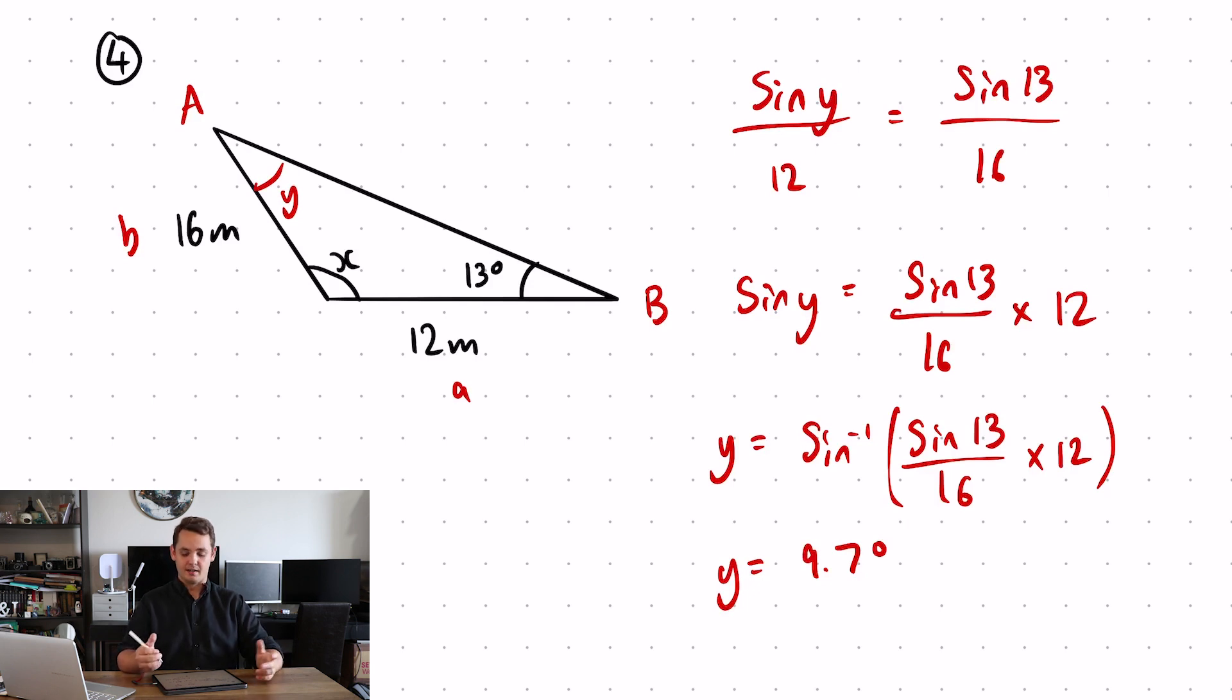But I don't want to find the size of angle Y. I want to find the size of angle X. So I'm going to now put this with my knowledge of angles in a triangle. So x is equal to 180 minus 13 minus 9.7 to give me an angle of 157.3 degrees.